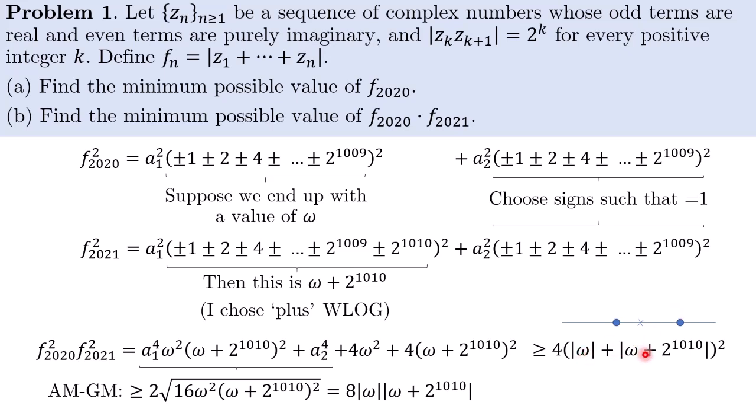And of course if omega is positive, then this quantity is even larger. You have omega, then we have yet another 2^1010 to the right, and we add all the distances up, it is even bigger. So we can see that this inequality is actually greater than or equal to 2^1010. With equality as long as omega is negative. So we don't have to worry too much. We just need to make omega negative. We will saturate this inequality.